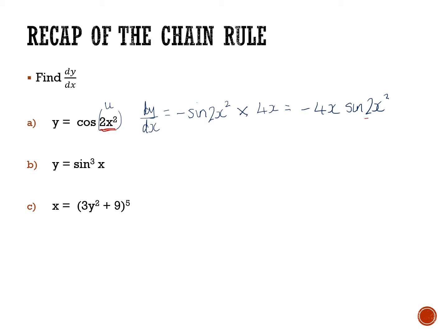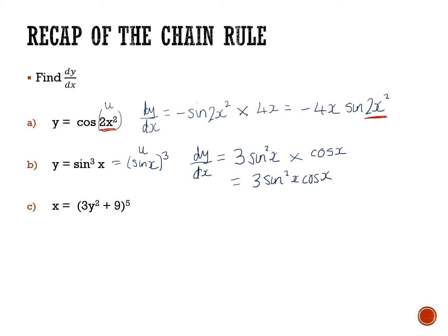This next one — examiners seem to like these. Remember sin²x is the same as writing sine x all cubed. So we've got something raised to a power: bring down the power, reduce the power by one. With the chain rule, times by du/dx — if I differentiate sine x I get cos x. So just tidy it up and write it all together: 3sin²x cos x.